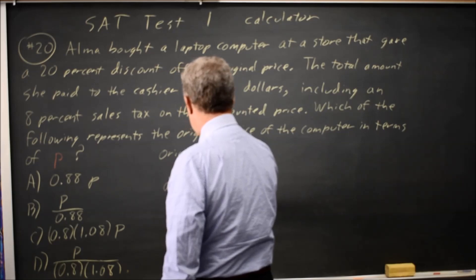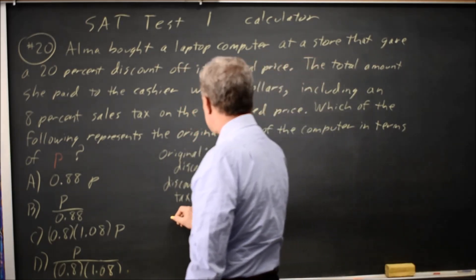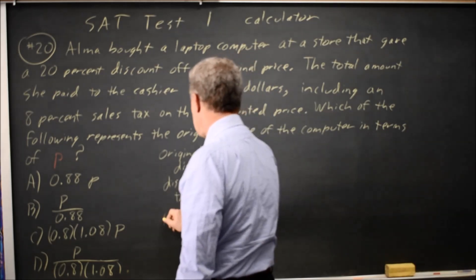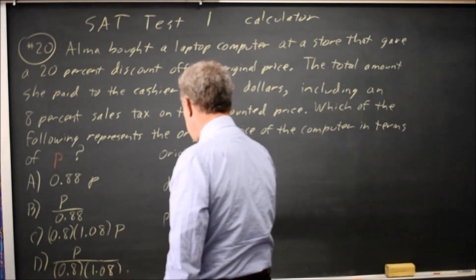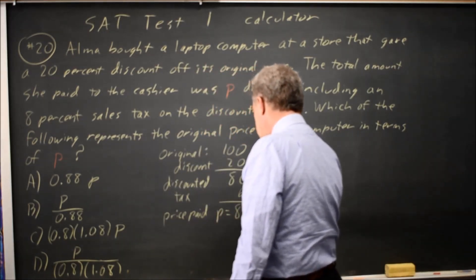Our calculator will tell us that the tax is $6.40, leaving a total price paid P equals $86.40.